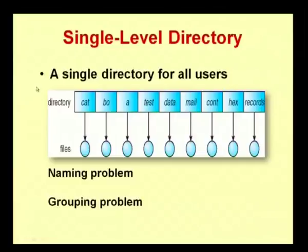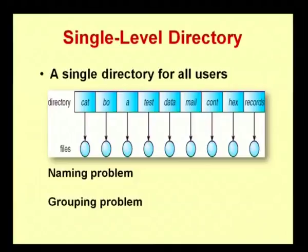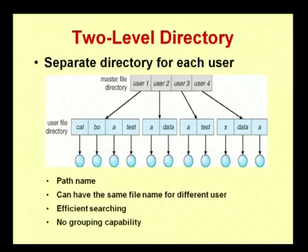There are different levels of directory structures. One is called a single level directory. A single level directory is for all users, where you have directories such as cat, bo, a, test, data, mail, cont, hex, and records — all files linked to this directory. When you have a single level directory, you have a naming problem and a grouping problem, because you have only one directory — considered as only one folder. Inside a single folder, two files cannot have the same names; a duplicate entry will occur and you will be prompted to change the file name.